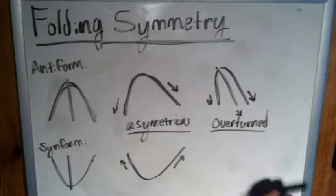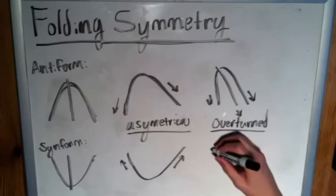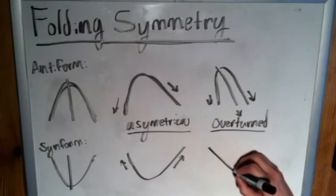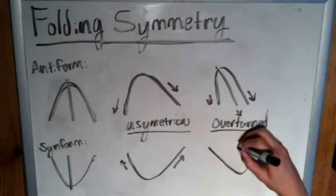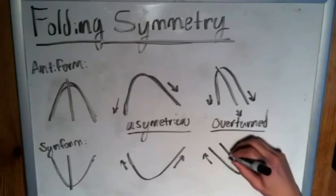So an overturned synform would look something like, just imagine it, their direction now they're both dipping like that.